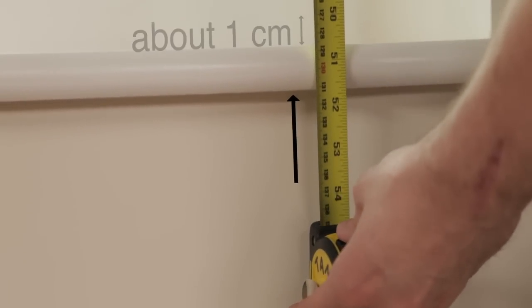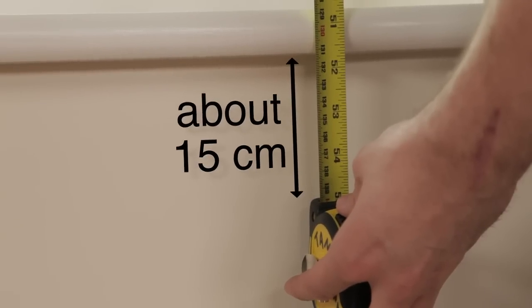Or you can cover the recess completely, adding about 15 centimeters below the window sill.